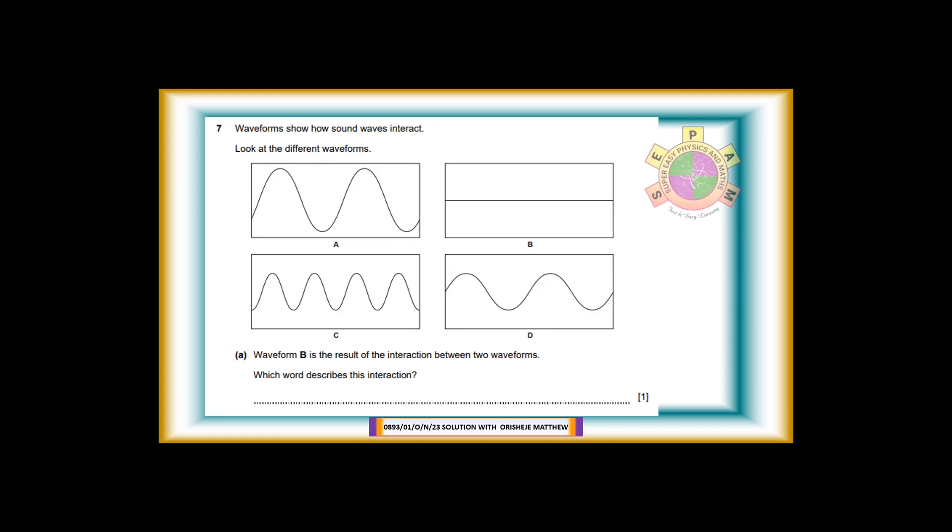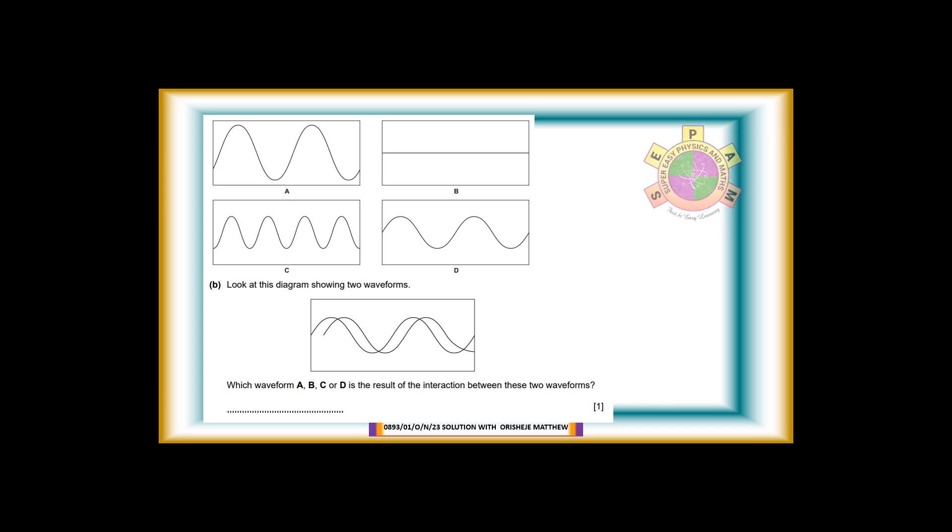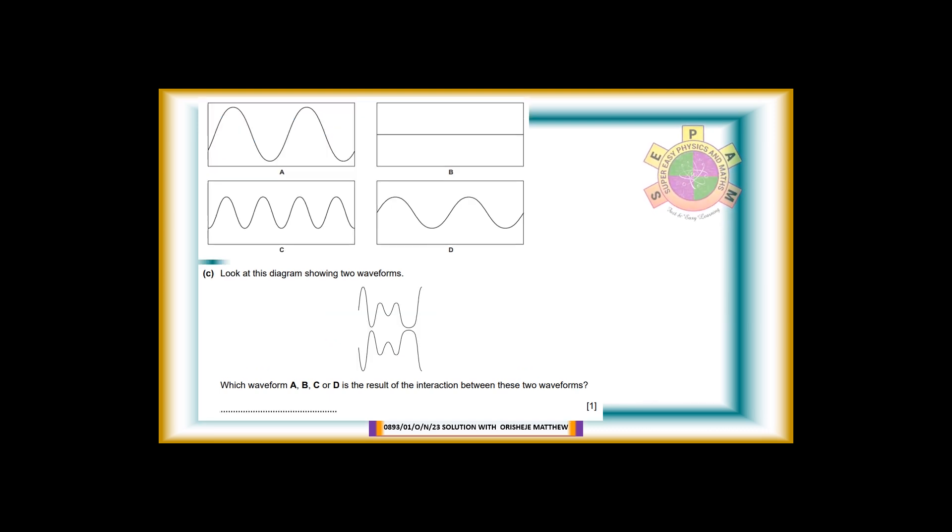Question 7. Waveforms show how sound waves interact. Look at the different waveforms. 7a: Waveform B is the result of the interaction between two waveforms. Which word describes this interaction? For 1 mark. Answer: Wave cancellation or complete destructive interference. Which waveform A, B, C, or D is the result of the interaction between these two waveforms? For 1 mark. Answer: Combination of waveform A. Combination of waveforms is the result of the interaction between these two waveforms. For 1 mark. Answer: Waveform B.